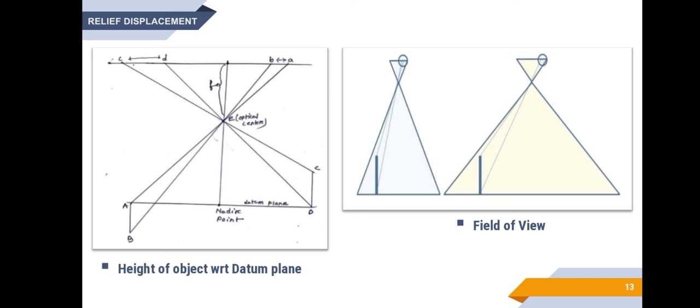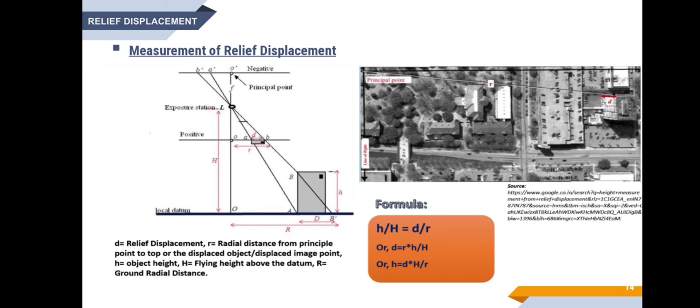The next factor is height of object in relation to datum plane. Relief displacement will be outward for points whose elevations are above the datum and inward for points whose elevations are below the datum. The last factor is the effect of field of view — a normal angle of view will result in smaller relief displacement. Relief displacement affects the construction of mosaics, since mosaicing consists of piecing adjacent photographs together to form one composite picture.